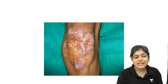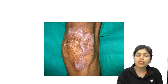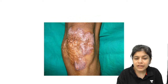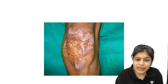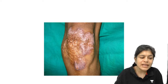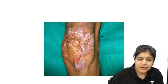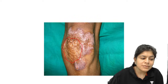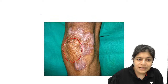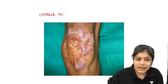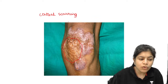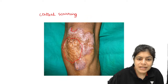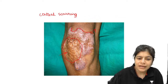Now look at this lesion on the knee. You can see central scarring with thinning, atrophy, and excessive wrinkling of the skin, and a peripheral border that is active and extending. There are no silvery micaceous scales for this to be psoriasis. The border is active — progressing at one end and healing with scarring at the other.